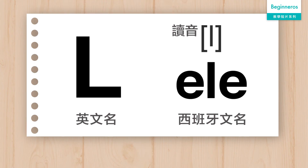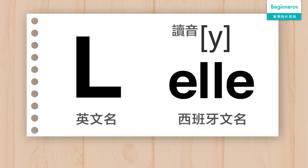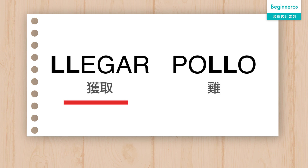Next is L. In Spanish, L has two forms. The first is a single L, which sounds the same as English L. For example, Libro, Leche. The second is a double LL, which sounds like the English Y. For example, Pollo.